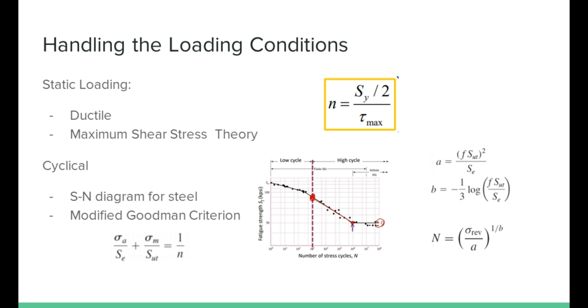When handling loading conditions, static loading, cyclical loading, and thermal analysis must be considered. Since the material we chose is AISI 1020 carbon steel, this material has a melting point of 1515 degrees Celsius and it can withstand heat generation, thus avoiding deformation and melting.